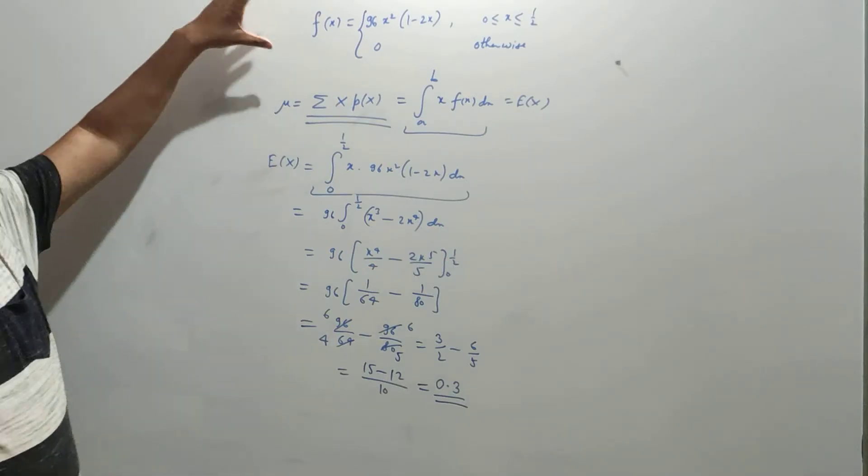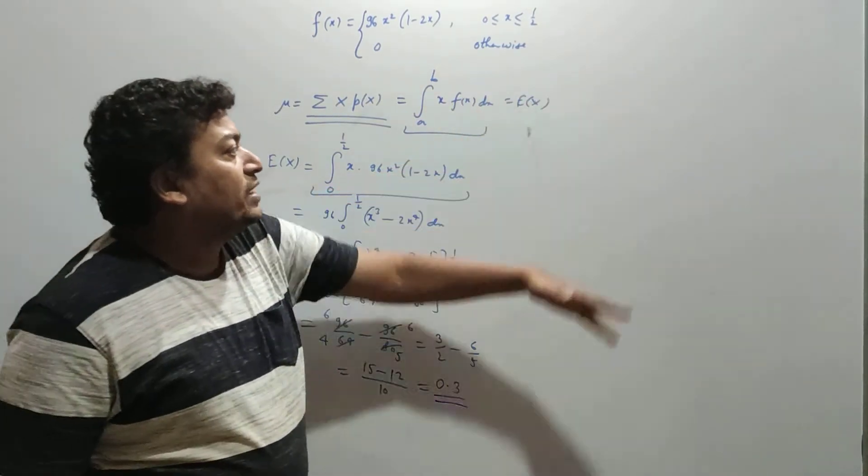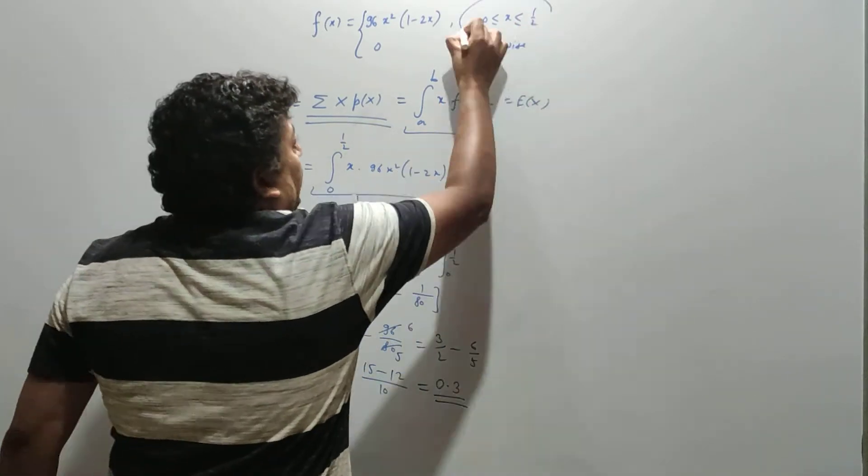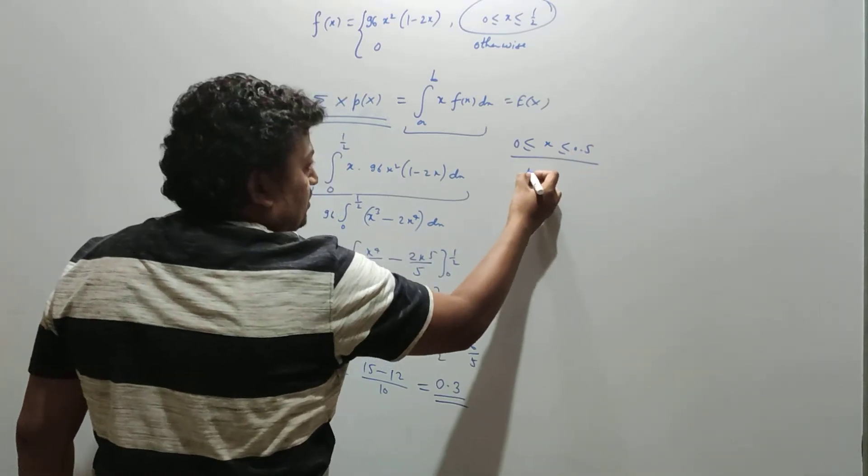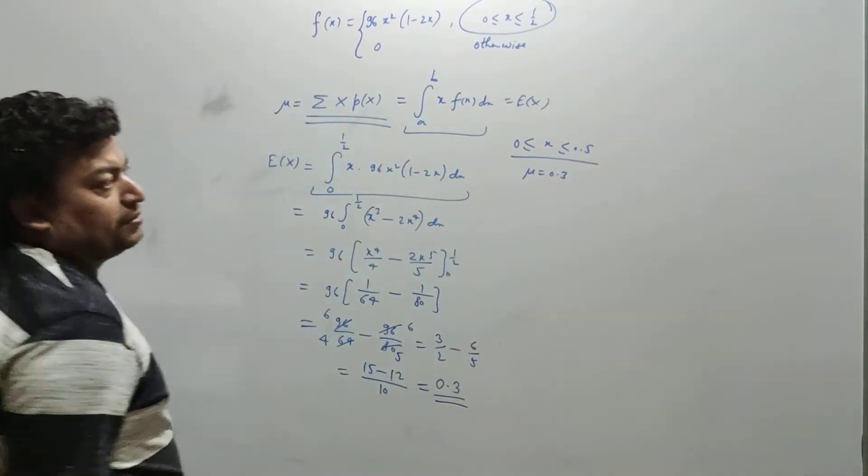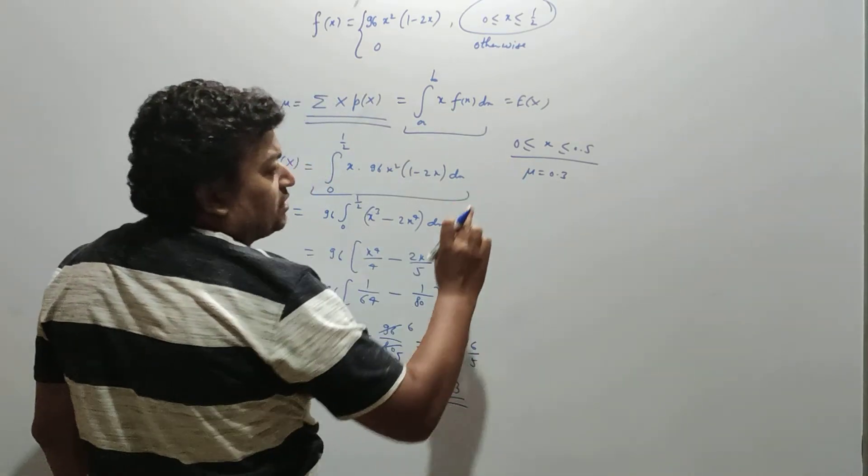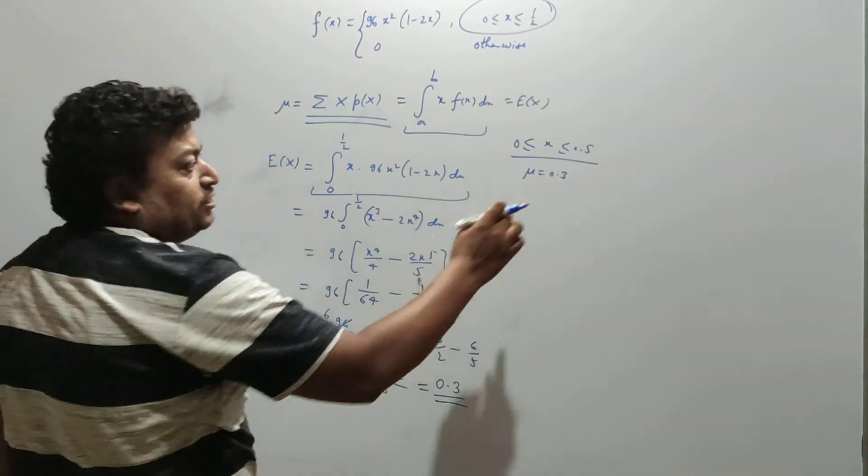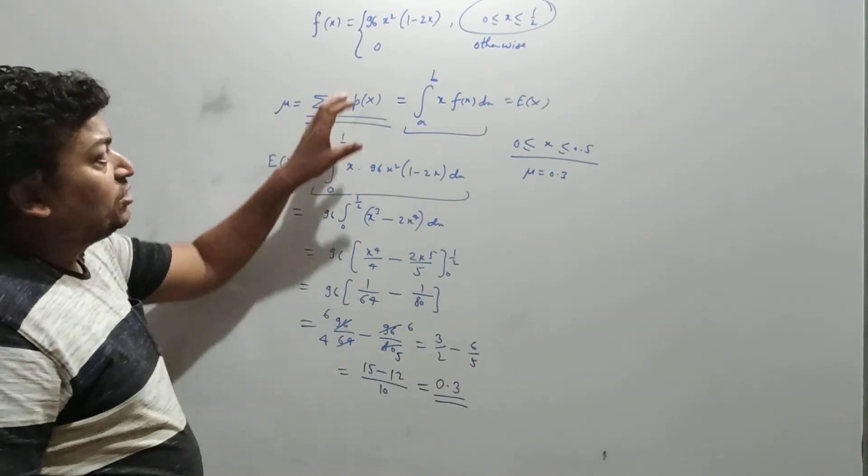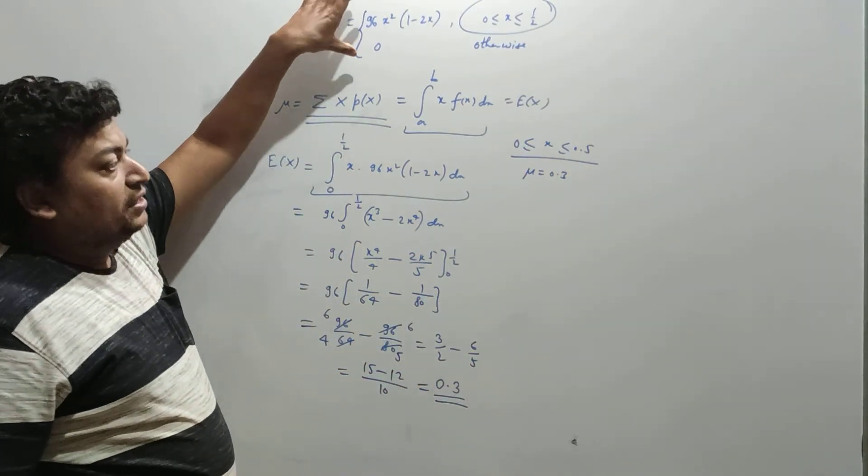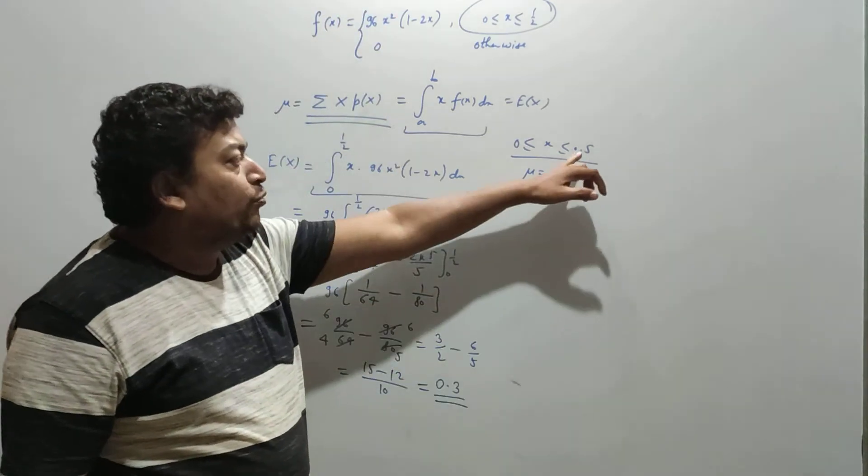For this PDF, the mean is 0.3. You can see that x is defined from 0 to 0.5, and the mean is 0.3. The distance from 0 to 0.3 is 0.3, and from 0.3 to 0.5 is 0.2. This shows it's not a symmetrical PDF, and the mean is not the midpoint of 0 and 0.5.